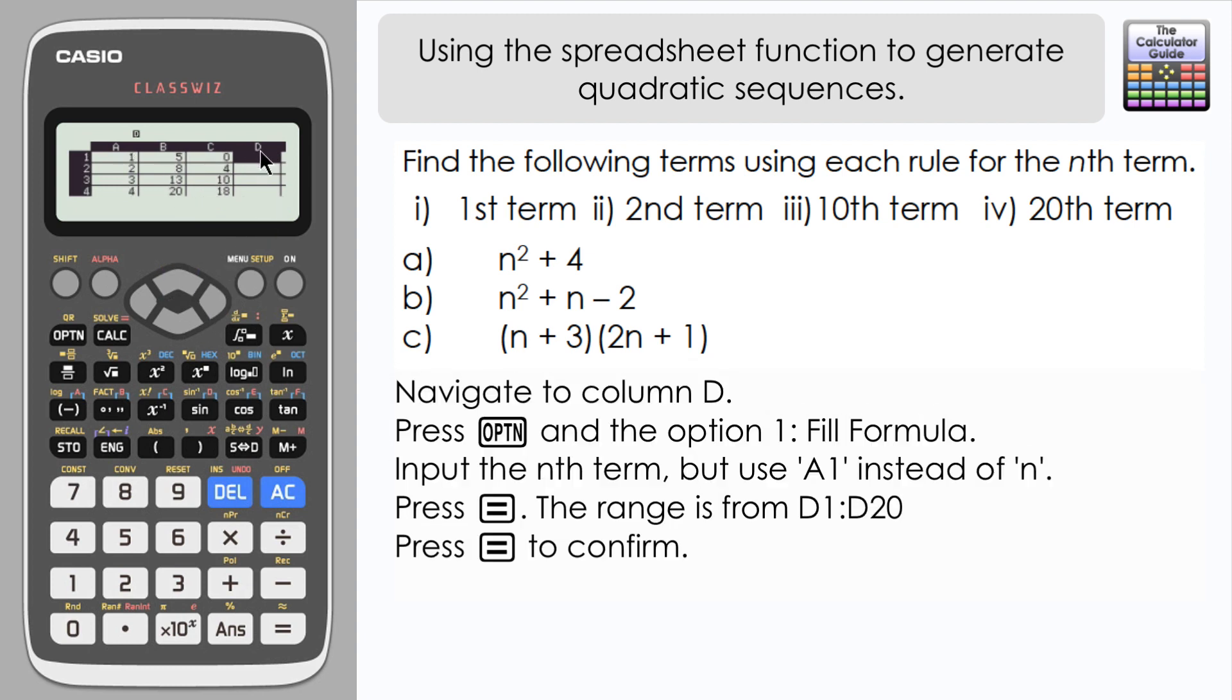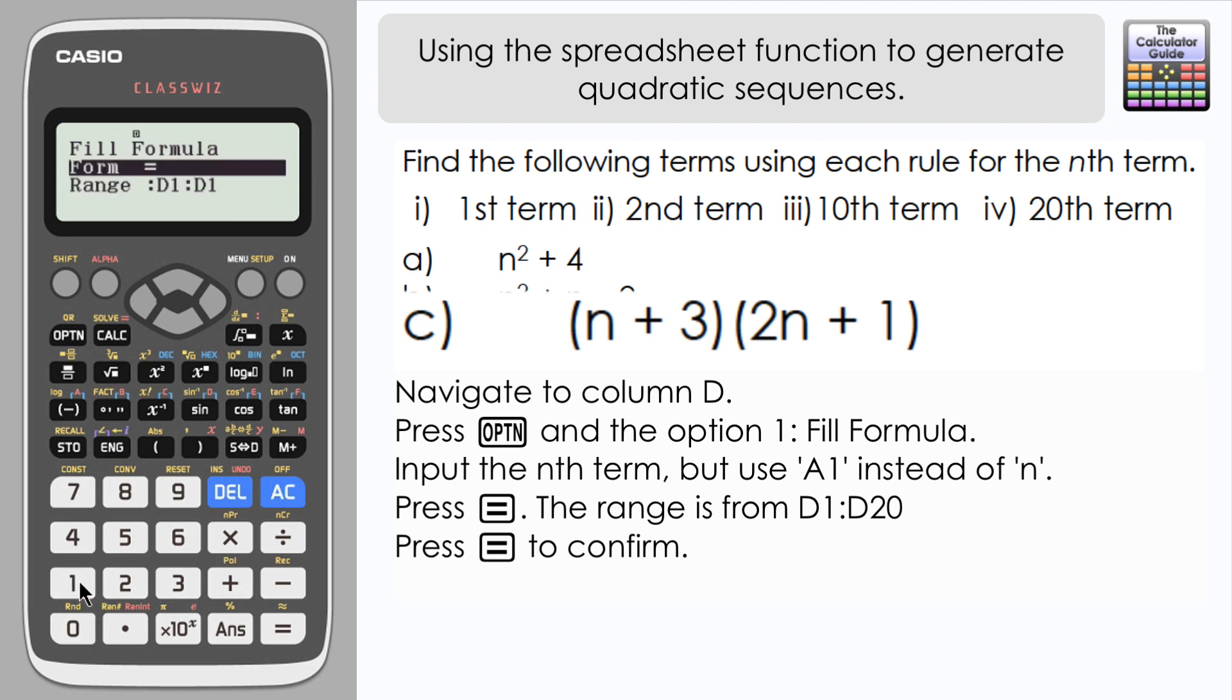So I'm going to navigate to column D now to do the last one. If you want to pause here if you want to have a go at it yourself beforehand, but I'm going to start off by filling in the formula. I'm going to press option, fill formula, and again any instances of n I'm going to replace with A1. Let's start off with some brackets or parentheses, and then I've got an n value.